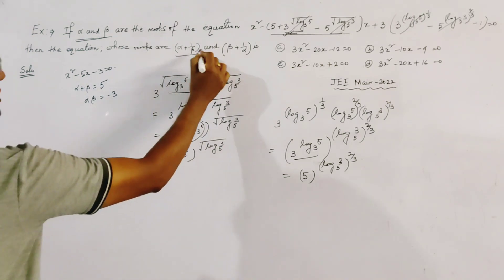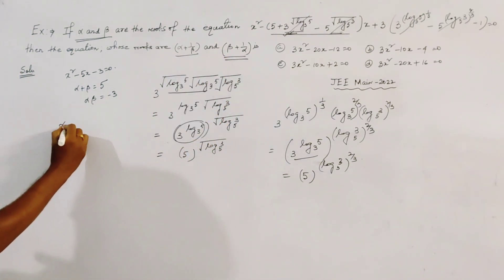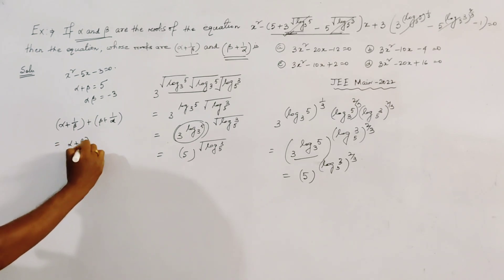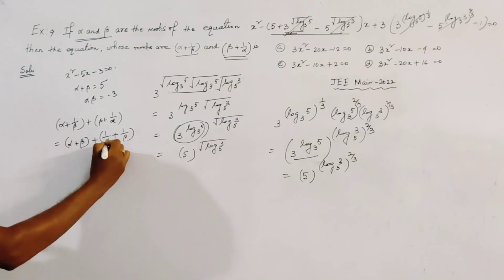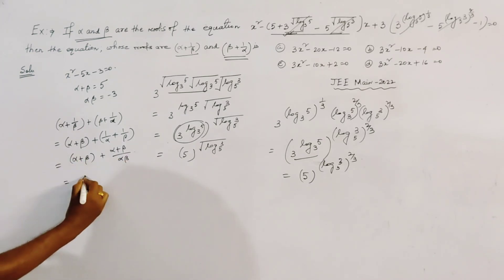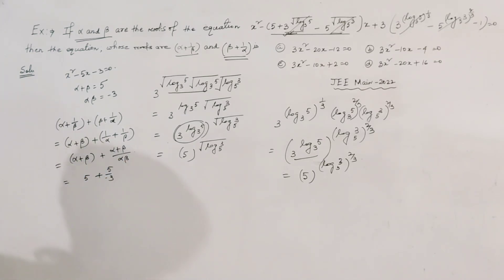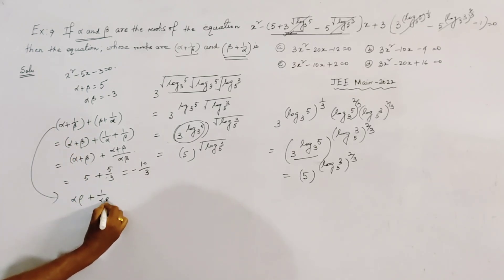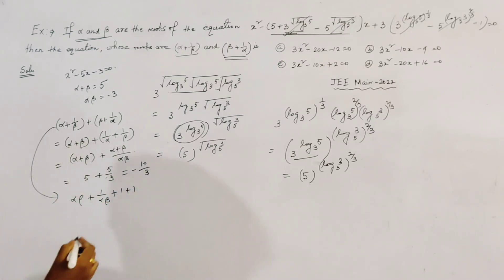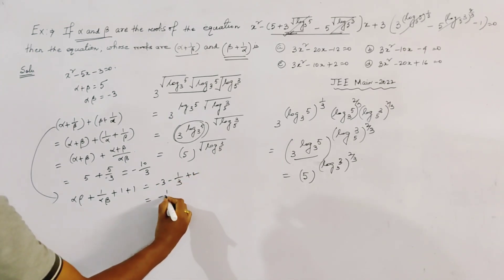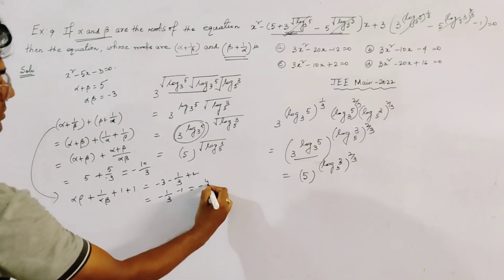Now we find the sum and product of the new roots. The sum, alpha plus 1 by beta plus beta plus 1 by alpha, equals alpha plus beta plus 1 by beta plus 1 by alpha, which equals alpha plus beta plus (alpha plus beta) divided by alpha beta. Substituting, this gives 5 plus 5 divided by minus 3, which equals minus 10 by 3. The product of the two new roots is alpha beta plus 1 divided by alpha beta plus 1 plus 1, giving minus 3 minus 1 third plus 2, which equals minus 4 by 3.